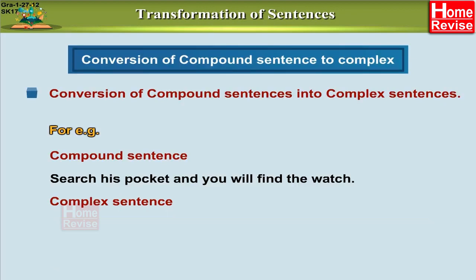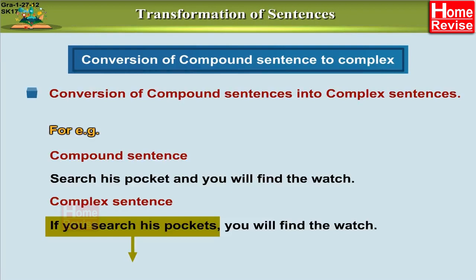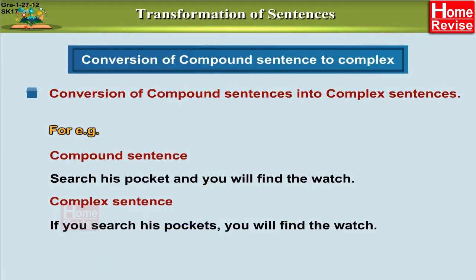The complex sentence becomes: 'If you search his pocket, you will find the watch.' Here, 'you will find the watch' is the main clause, and 'if you search his pocket' is the subordinate clause. A complex sentence needs to have a main clause and a subordinating clause. Here, the subordinating clause is introduced by the subordinating conjunction IF, making it a conditional sentence.